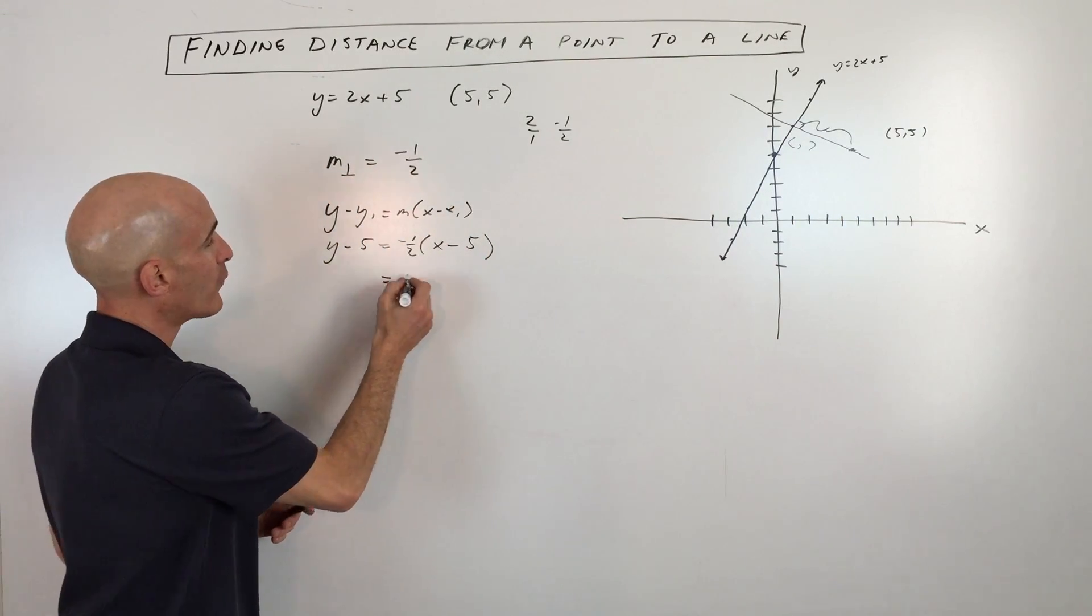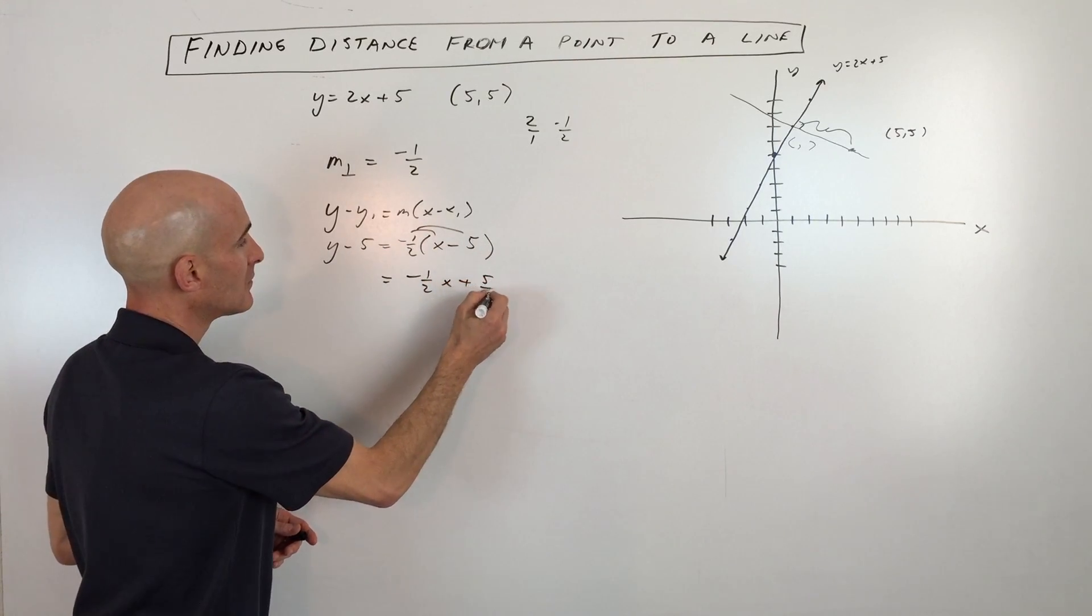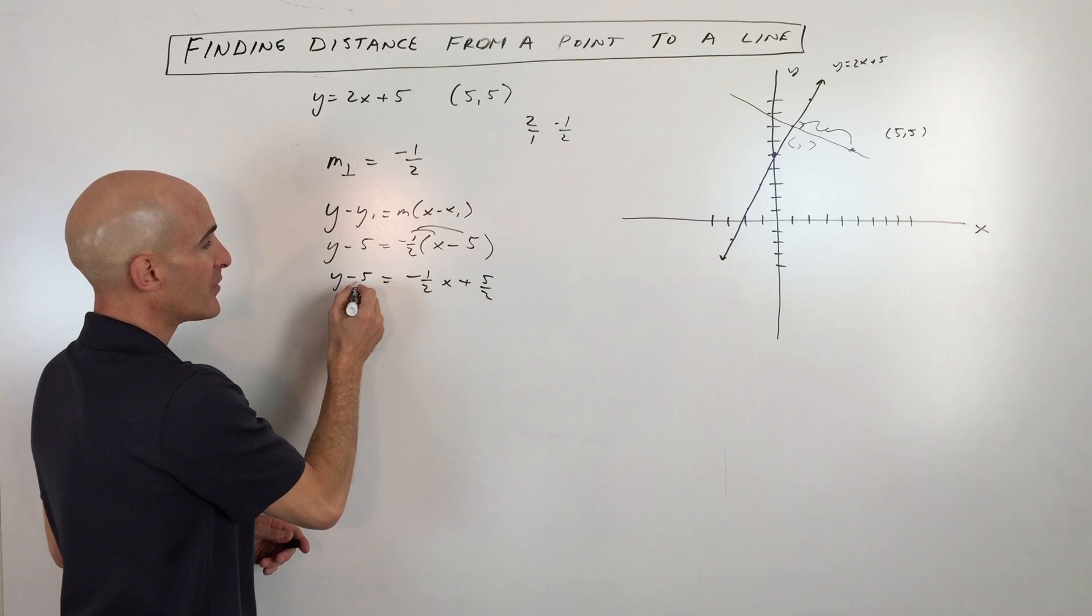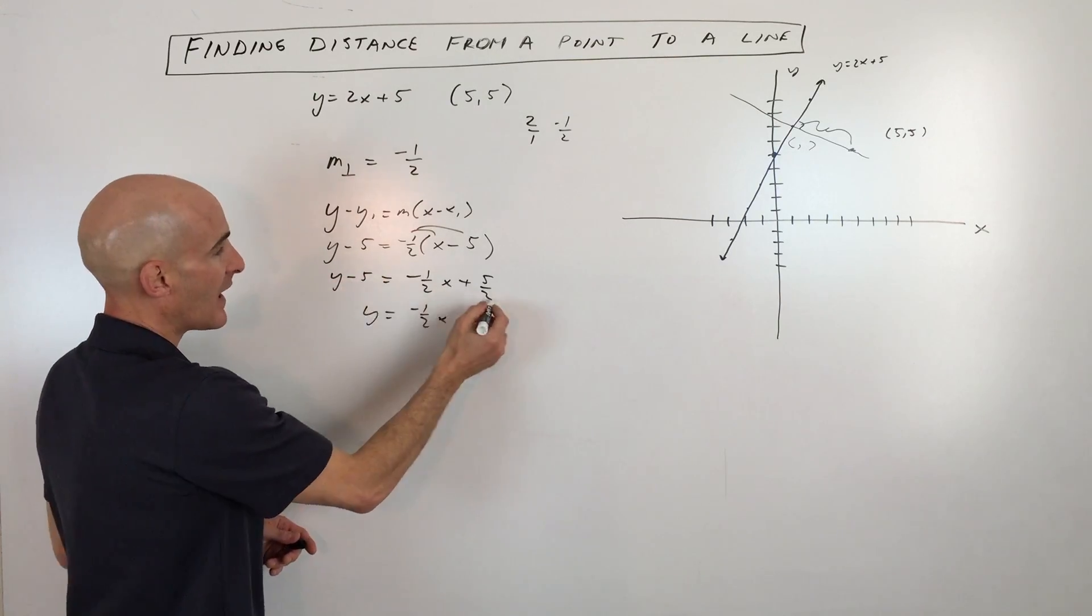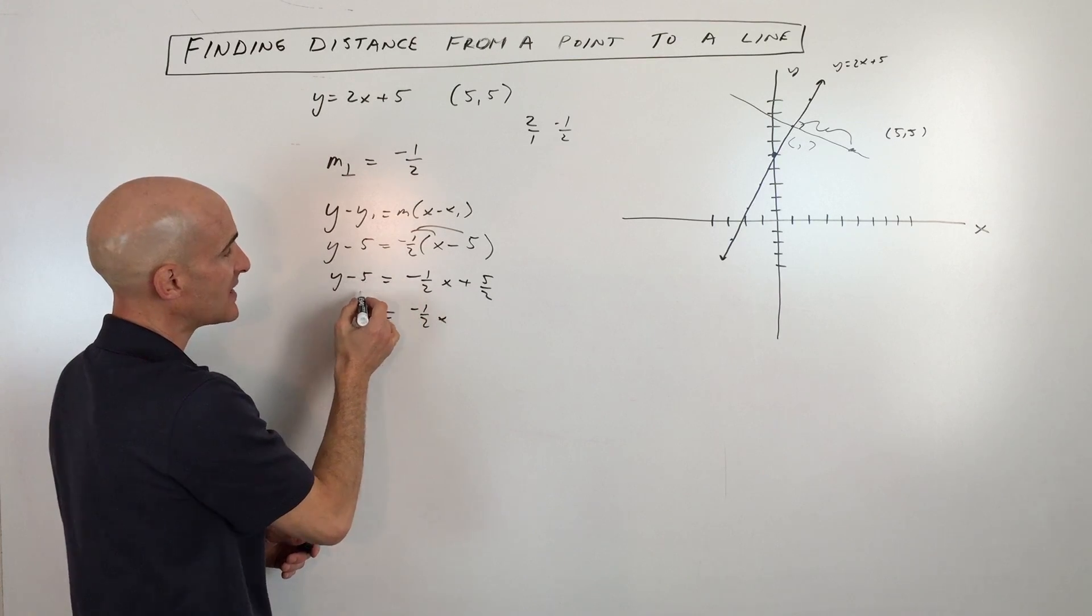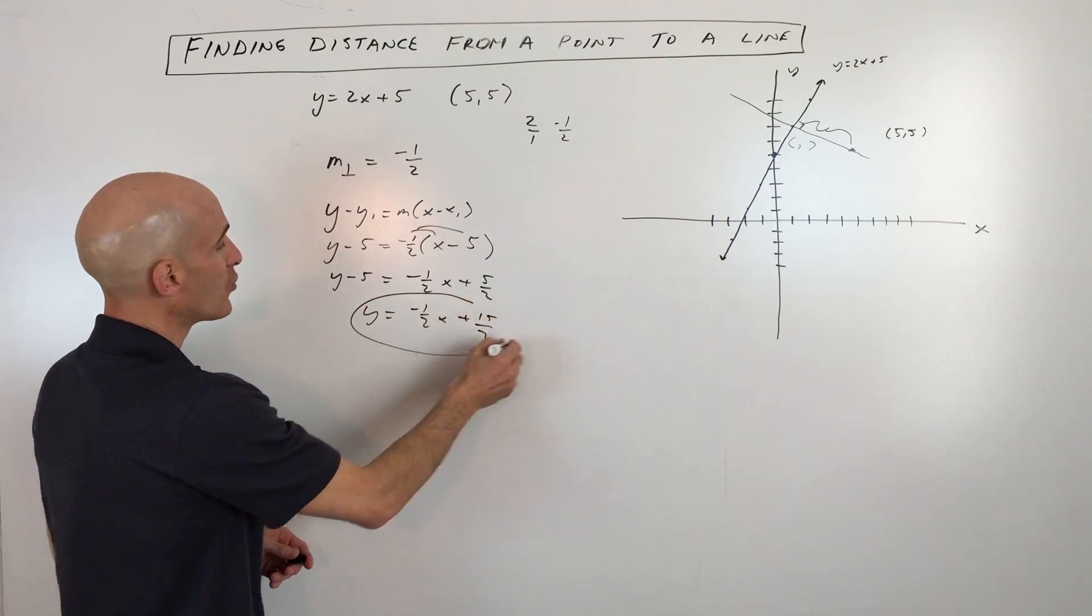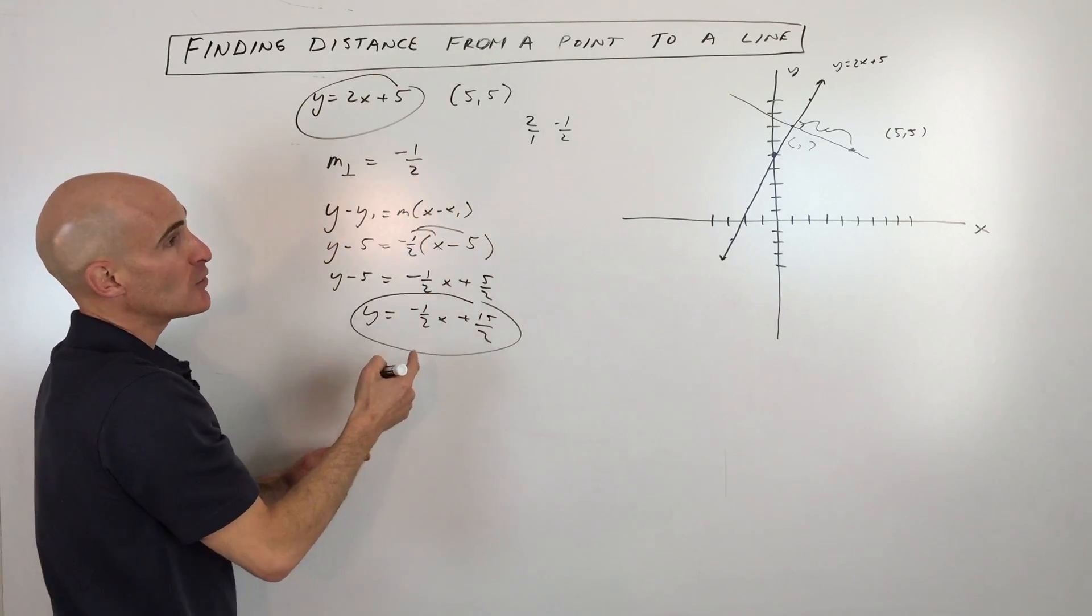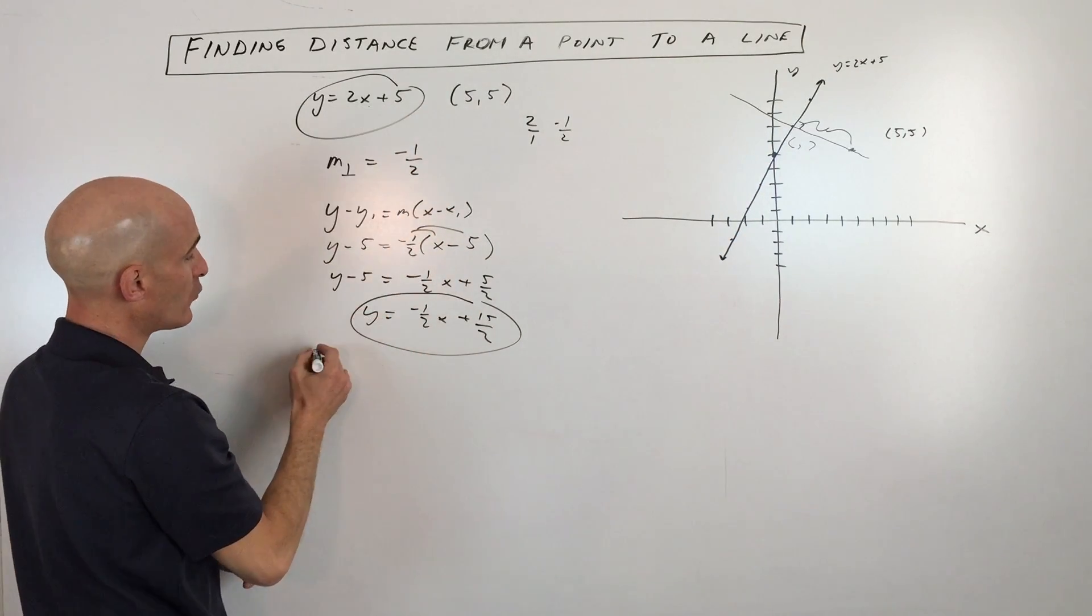So I'm going to simplify this equation a little bit more for us by distributing the negative 1/2. I'm going to add 5 to the other side. So that's y equals negative 1/2x. Add 5. So 5 is really like 10 over 2, so that's going to be plus 15 over 2. And now we have our two equations. I'm going to set them equal to each other to find that point of intersection. So I'm going to put 2x plus 5 in for y here.